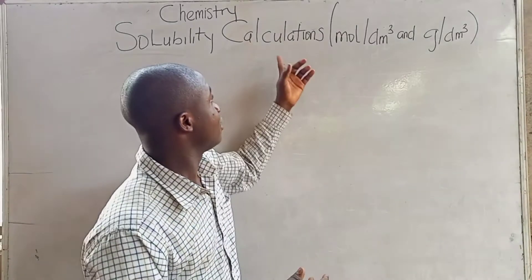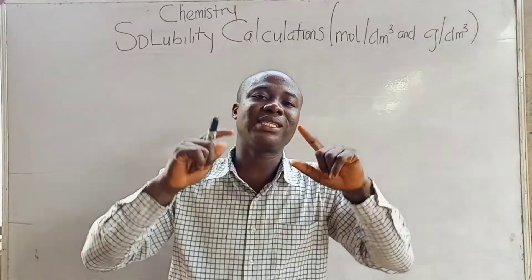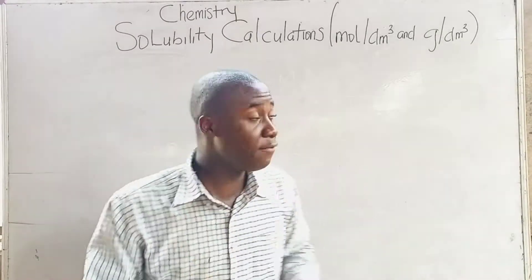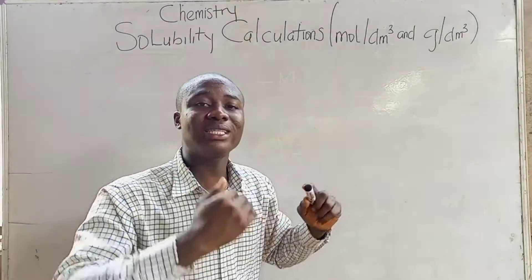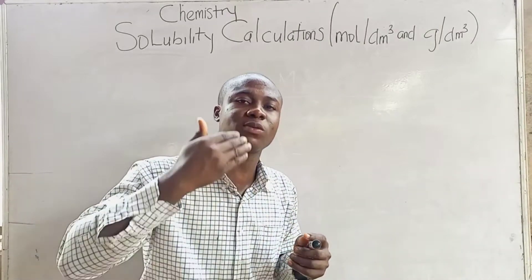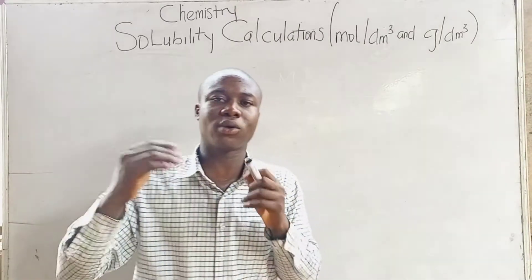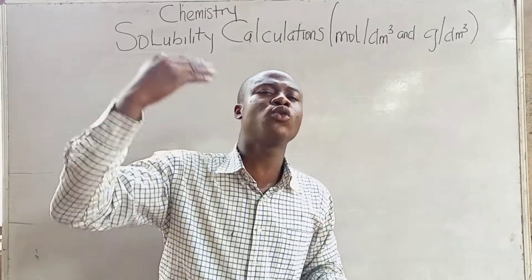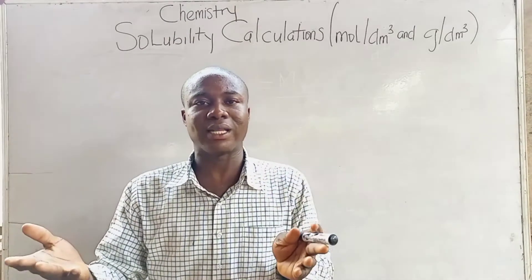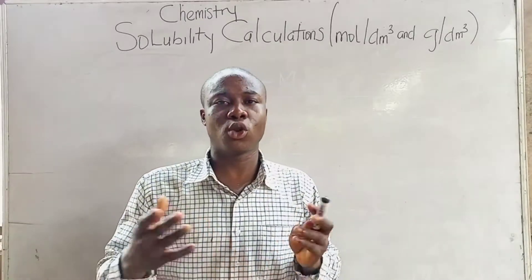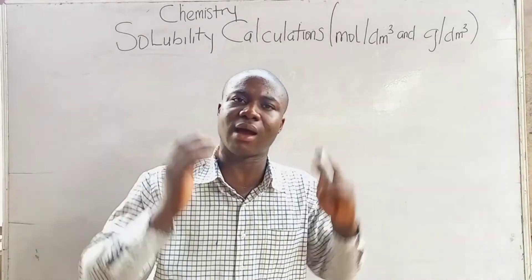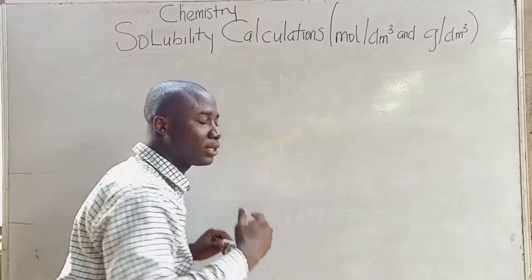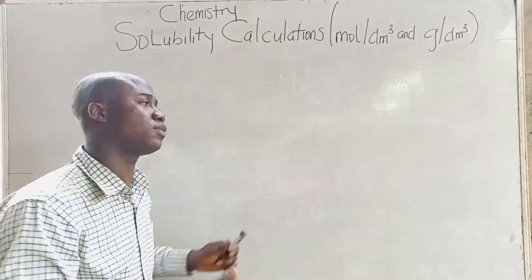Solubility can be expressed in two SI units. The first is calculating solubility in moles per dm³, and also calculating solubility in grams per dm³. So, how do we calculate solubility in moles per dm³? How do we calculate solubility in grams per dm³? Let us quickly talk about calculating solubility in moles per dm³.